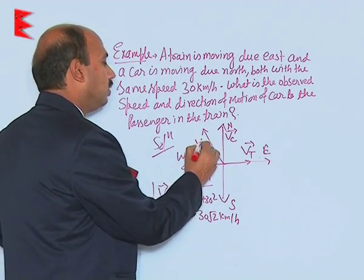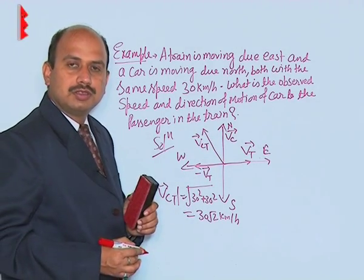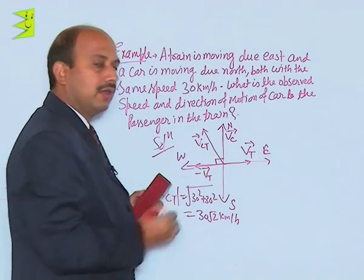This is the velocity of car with respect to train. I have just applied here the vector addition process; this angle was 90 degrees.